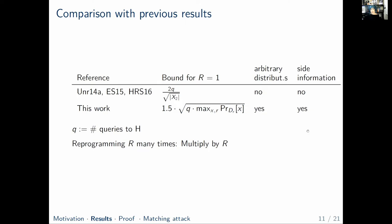Now I can compare our results with what was previously known. There has been prior work on this question, all resulting in essentially the same bound. But none of those results considered arbitrary distributions that might be adaptively picked — they just considered the uniform distribution. They also didn't consider side information forwarded to the attacker. All those bounds are for just one reprogramming incident, and all results share that if you want to reprogram R many times, you multiply the bound by R.